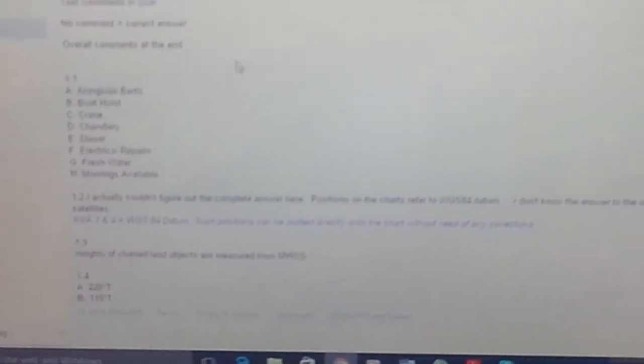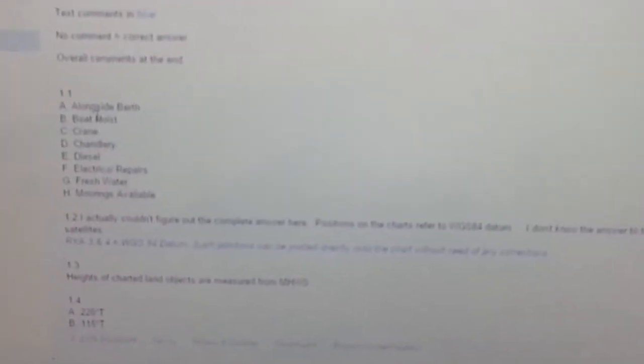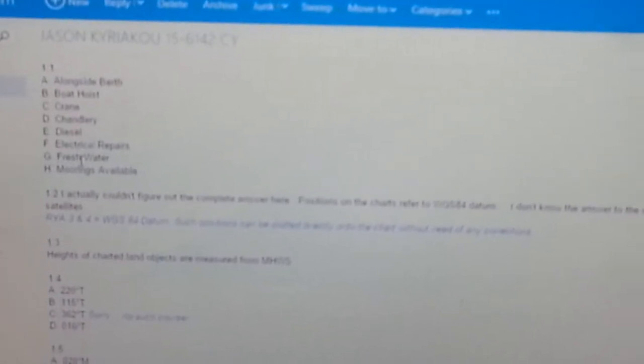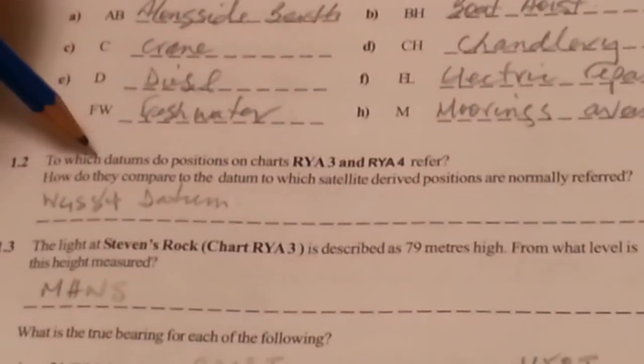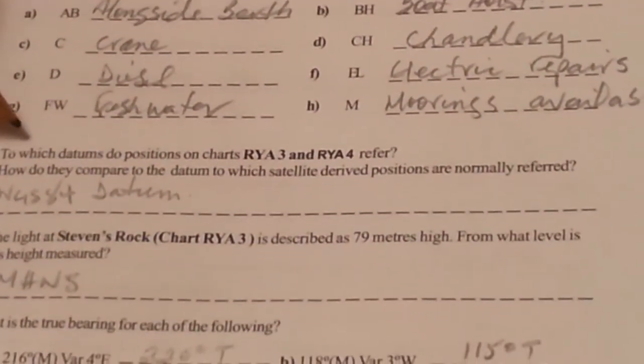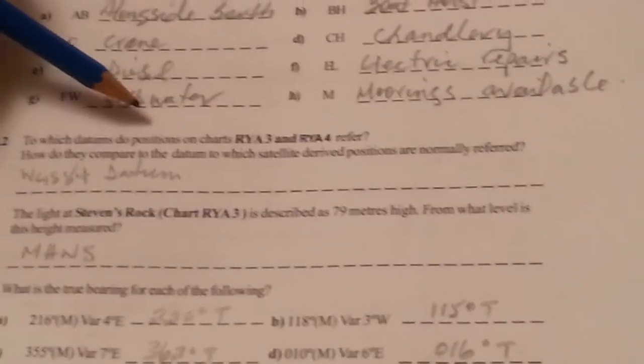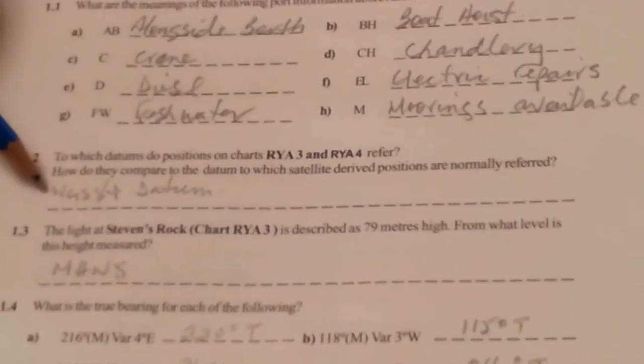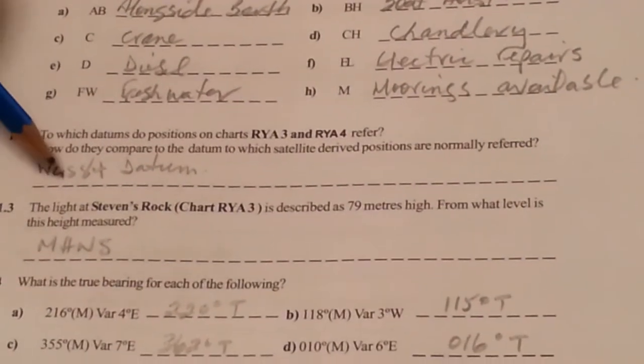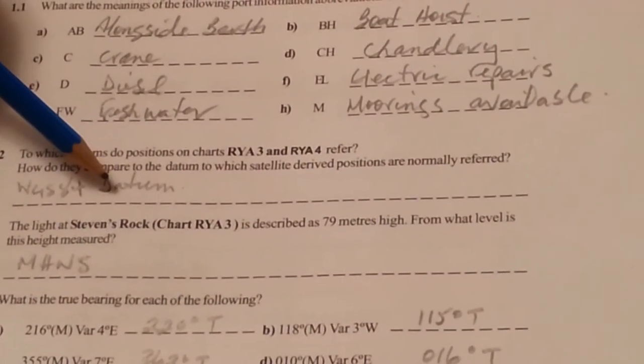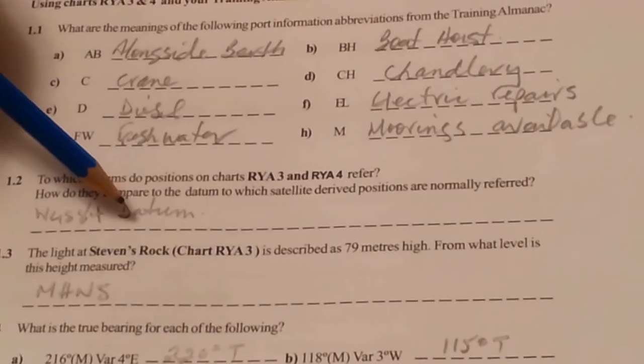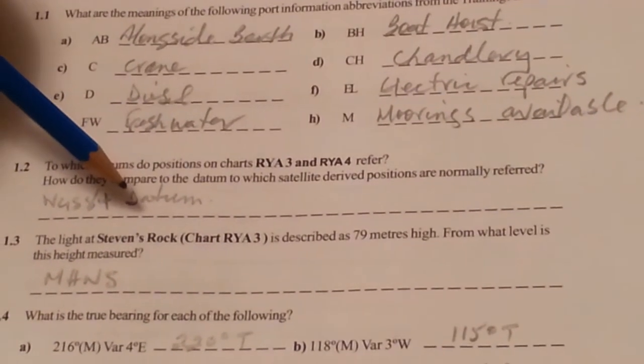So 1.1 they're all correct. 1.2 as I mentioned on the video I wasn't sure about the full answer. The question was to which datums do positions on charts 3 and 4 refer? I said WGS 84 datum and my tutor put in the same thing, WGS 84 datum, but the rest of the answer is such positions can be plotted directly onto the chart without need of any corrections.